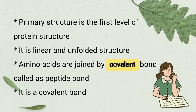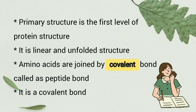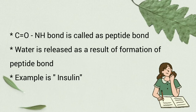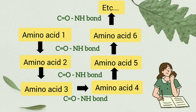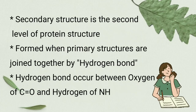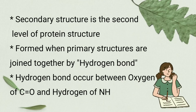Primary structure is a linear and unfolded structure. The peptide bond is a covalent bond, and it is a condensation bond — water is released as a result of the formation of the peptide bond. An example of primary structure is insulin.